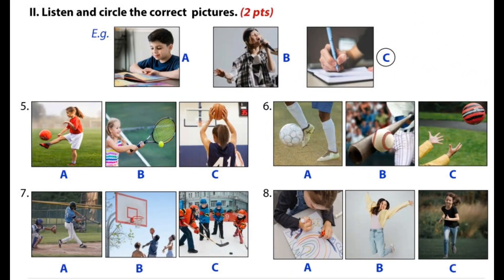Now turn to part two. Part two: listen and circle the correct pictures. For example, he can write — the correct answer is C. Now you listen and circle the correct pictures. Number five: she can play tennis. Number six: he's kicking the ball. Number seven: they can play basketball. Number eight: she's running.